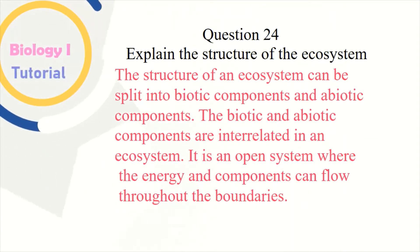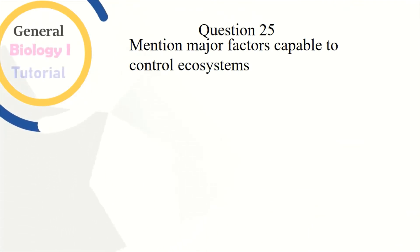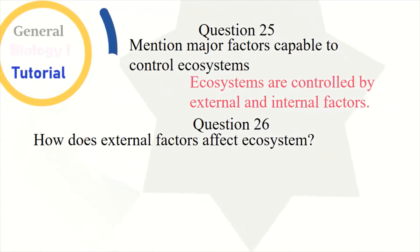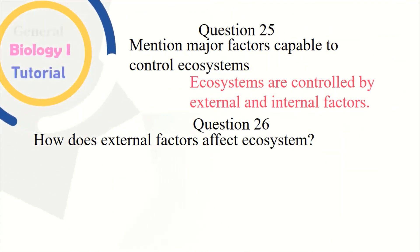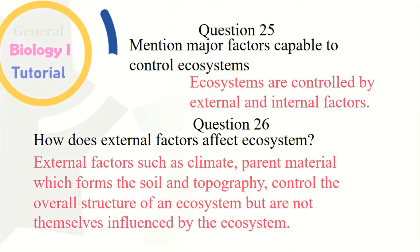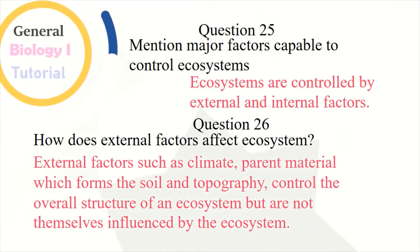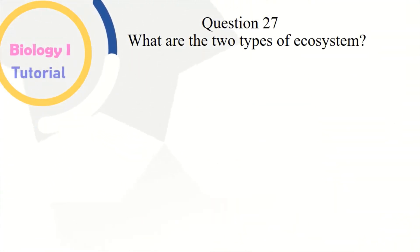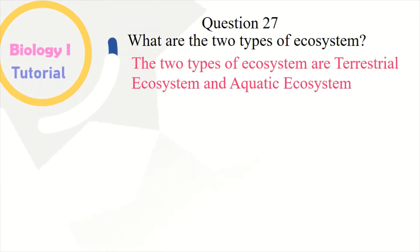The biotic and abiotic components are interrelated in an ecosystem; it is an open system where energy and components can flow throughout the boundaries. Question 25: Mention major factors capable of controlling ecosystems. Ecosystems are controlled by external and internal factors. Question 26: How do external factors affect ecosystems? External factors such as climate, parent material which forms the soil, and topography control the overall structure of an ecosystem but are not themselves influenced by the ecosystem.